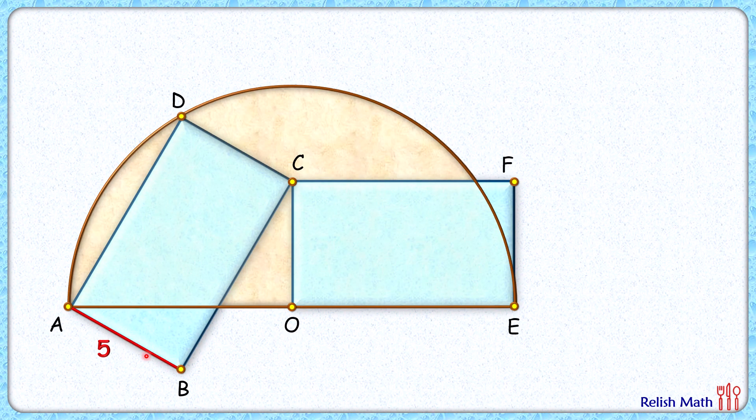The width of rectangle is given as 5 centimeter, thus DC length is 5 centimeter. Rectangles are congruent and thus CO length is 5 centimeter. Let's join DO here. Let's assume the radius of this semicircle is r centimeter, thus AO length will be r and DO, that's the radius of the semicircle, is r.